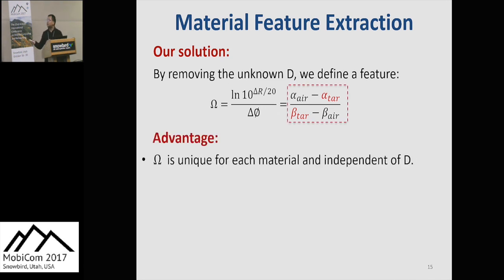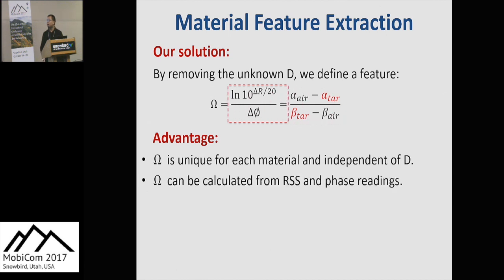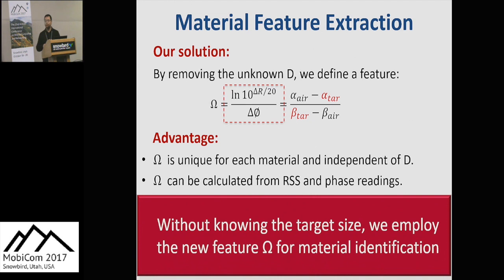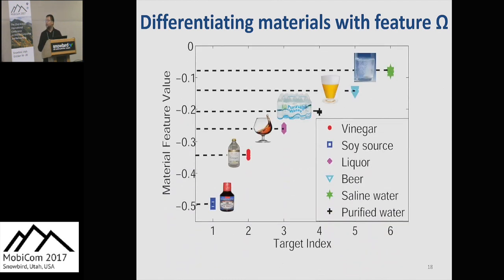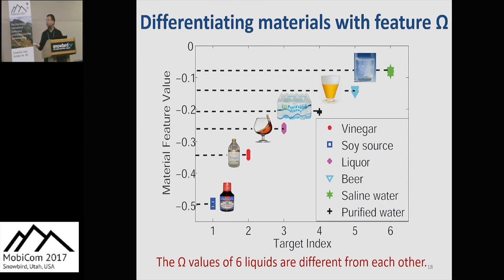As we can see, this new feature is independent of the target size D. The new feature is unique for each material type, since alpha-A and beta-A are constants, and alpha-Target and beta-Target are unique for each material type. This new feature can be easily calculated from the phase and RSS readings. So now, without requiring the target size information, we can employ the new material feature for material identification. I will show you the new material feature values of different liquid targets — for the six kinds of liquid targets, the new material feature value is quite different from each other.